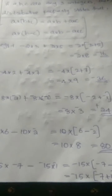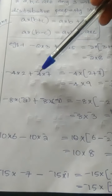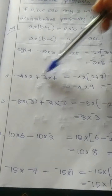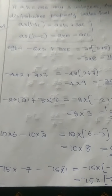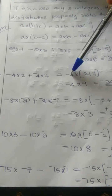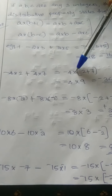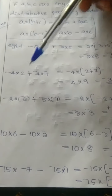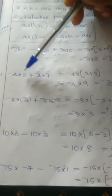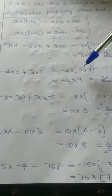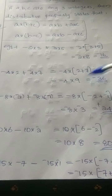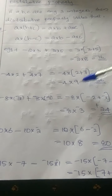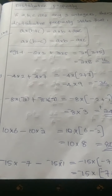Next question: minus 4 into 2 plus minus 4 into 7. Which number is common here? Minus 4 is common. We take out minus 4, put the multiplication sign and bracket, then write the remaining numbers: 2 plus 7. That gives minus 4 into 9. We know 2 plus 7 equals 9, and minus 4 into 9 equals minus 36.